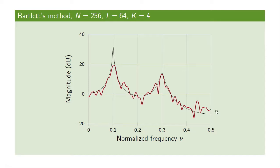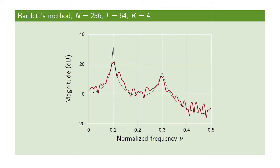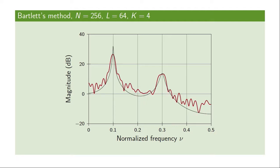Drawing several more realizations shows that the variation between realizations is reduced. We should have a variance which is only 1/4 of the periodogram's variance, since we have K equal to four blocks. In Bartlett's method, if we obtain more samples — increasing from 256 up to 1024 — we could use those either to increase resolution by increasing block length, or to decrease variance by increasing the number of blocks while keeping block length fixed.